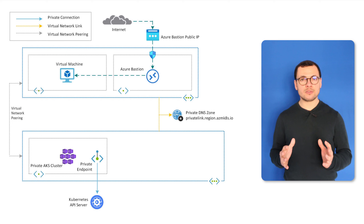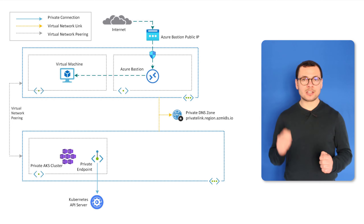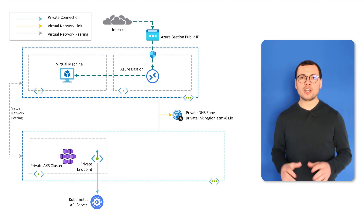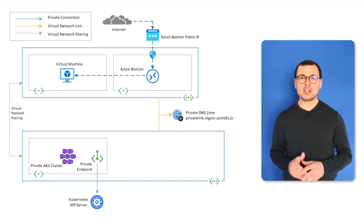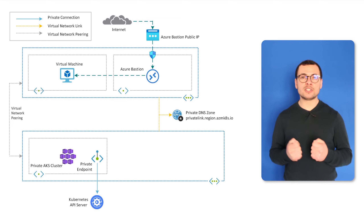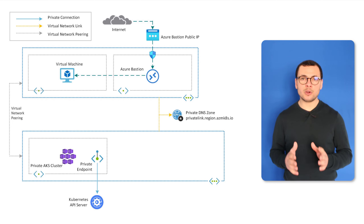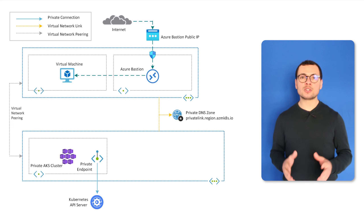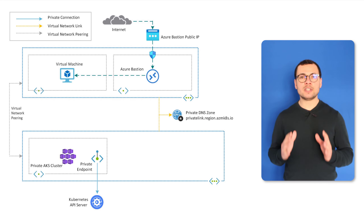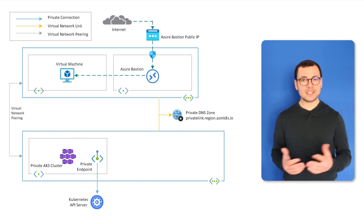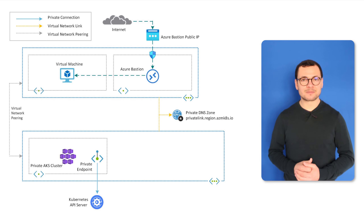In today's video, I'll show you how we can connect to that cluster using an Azure virtual machine with Bastion and leveraging the Azure private endpoint, which is private link service, and also the Azure private DNS zone. So let's see how that works.